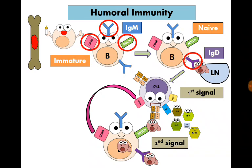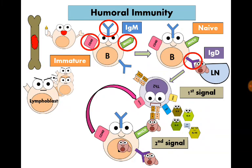B lymphocyte now becomes activated to be a lymphoblast that proliferates to form a clone of identical cells with the same specificity.